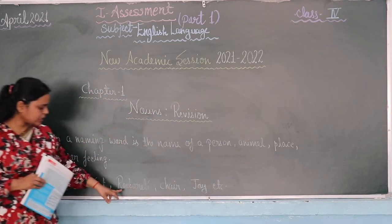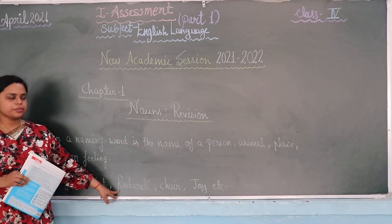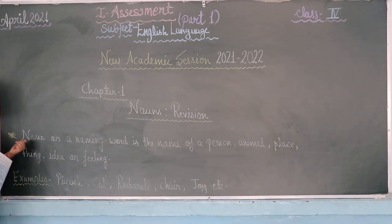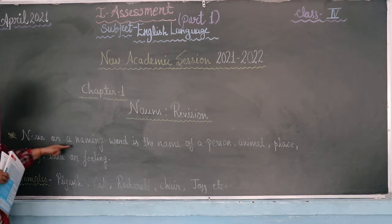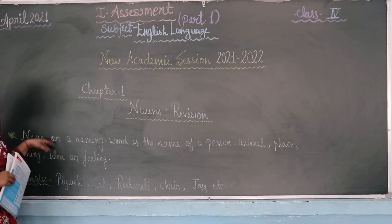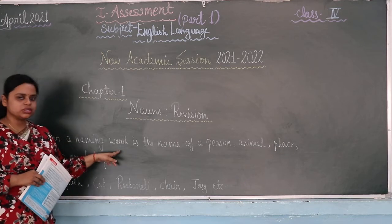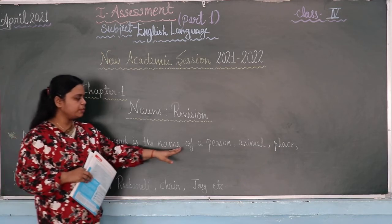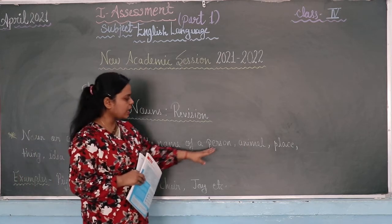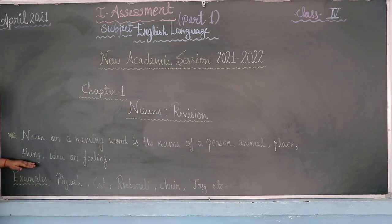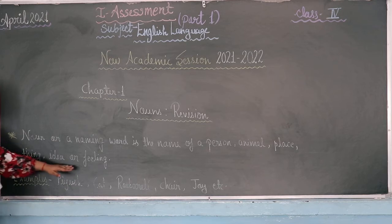We live in the city and live in the library. So basically, in simple words, what is the definition of the noun? Noun, or a naming word — noun is the name of a person, animal, place, thing, idea, or feeling.